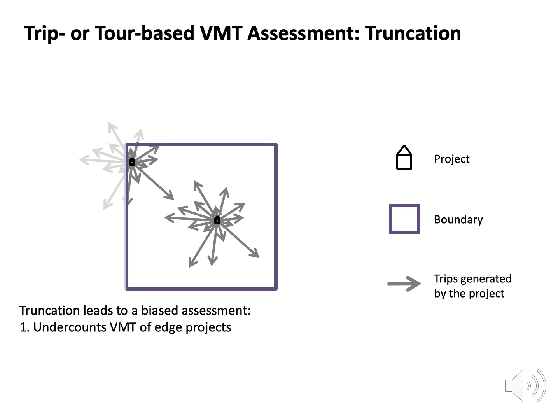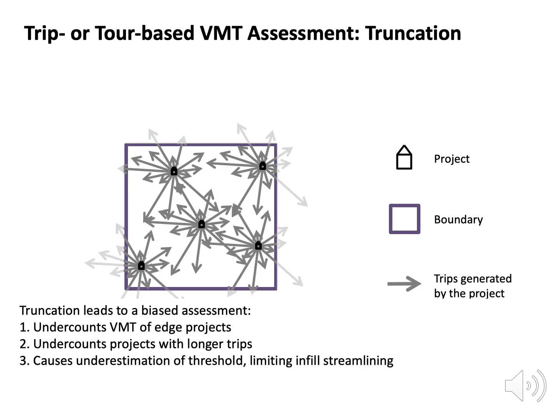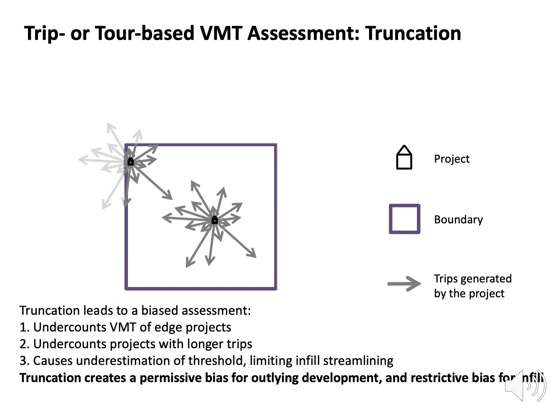First, truncation leads to worse undercounting for projects near the edge. Second, it leads to worse undercounting for projects which generate longer trips. Third, it causes underestimation of the threshold of significance. As a result, truncation biases both project analyses and determinations of thresholds of significance. The bias is more permissive for high VMT outlying development and more restrictive to low VMT infill development.